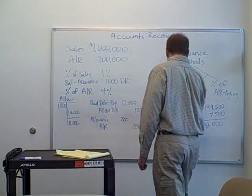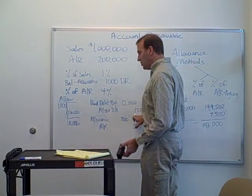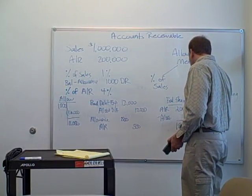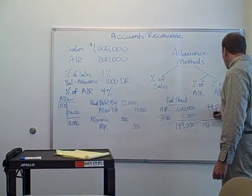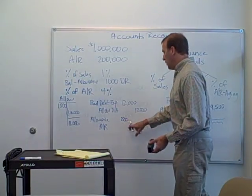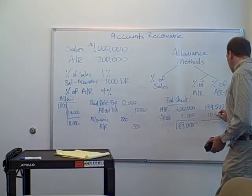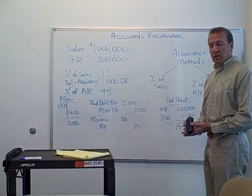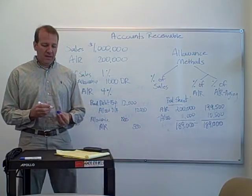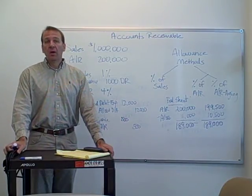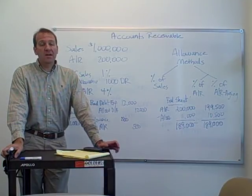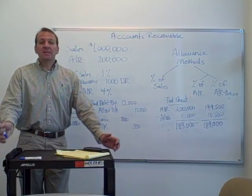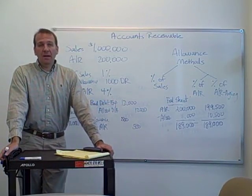The ending balance we want is $11,000, making net accounts receivable $189,000. When we write off that $500 the next year, the same principle applies: writing off an accounts receivable under the allowance method has no overall impact on net accounts receivable. It impacts accounts receivable and the allowance in opposite directions, so the net effect is zero.